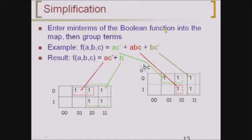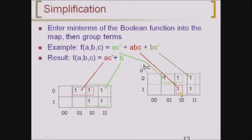For simplification, first enter the minterms into the map, then group the terms. We can see the difference between maximum-size grouping and small-size grouping. Using small grouping — grouping two minterms, two minterms, and one minterm separately — gives three terms in the resultant expression. Using maximum-size grouping reduces the expression to only two terms. We must always go with maximum-size grouping, which reduces the number of literals and therefore the number of gates.